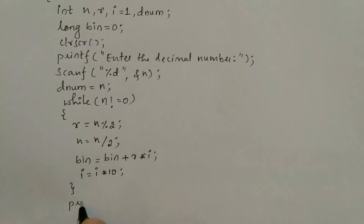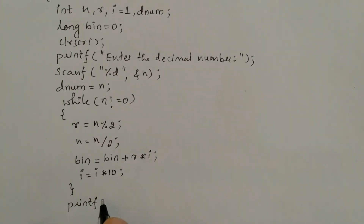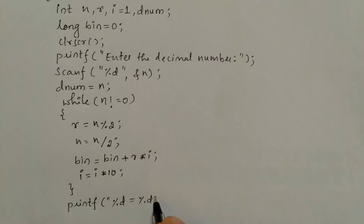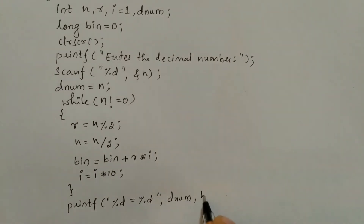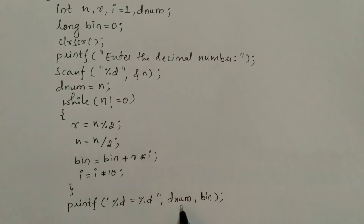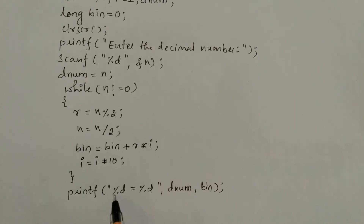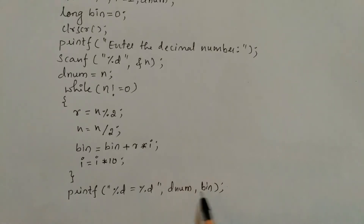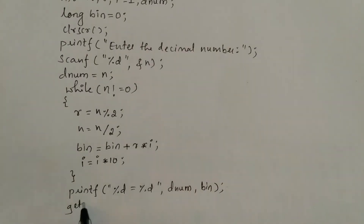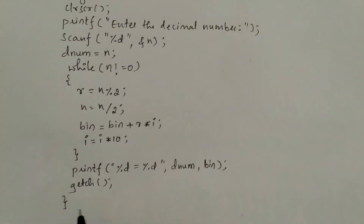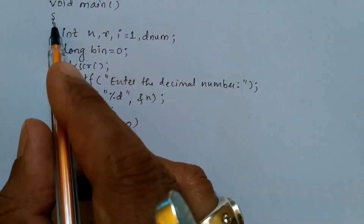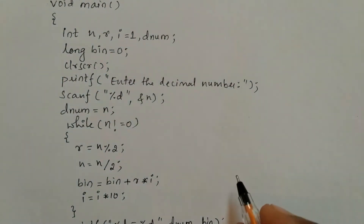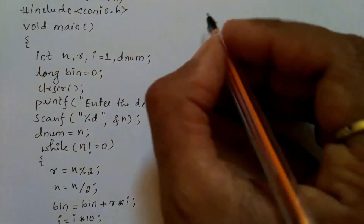After the loop, we write a printf statement: "%d = %d" with denum and bin as arguments — so the original decimal number and its binary equivalent are printed. Then we write getch() and the closing brace for the main function.